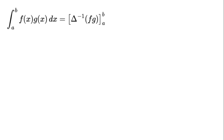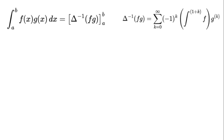From our antiderivative series, delta to the power of negative 1 times (f times g) equals the sum from k equals 0 to infinity of negative 1 to the power of k times the antiderivative of f to the power of 1 plus k times g to the power of k.